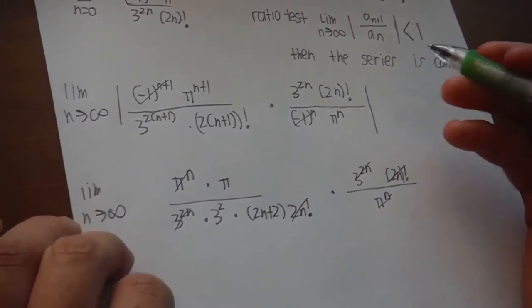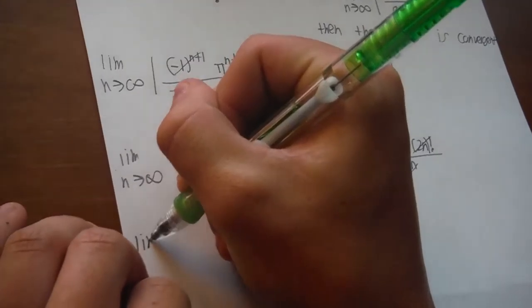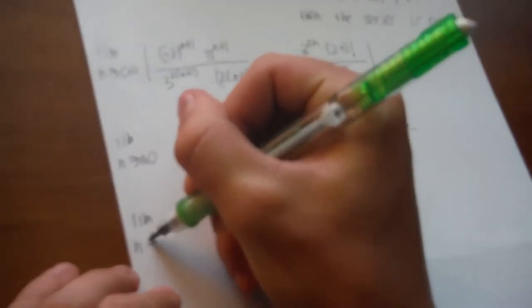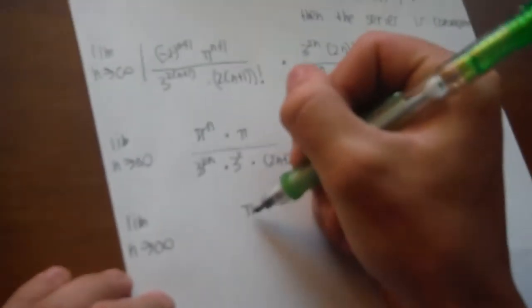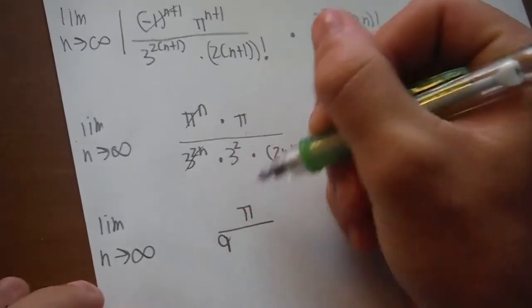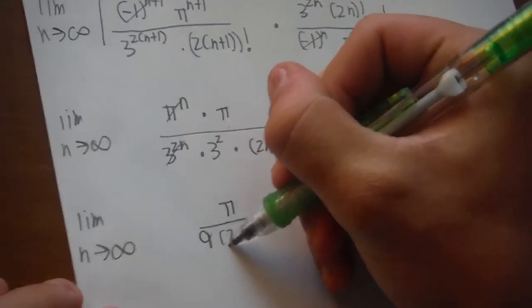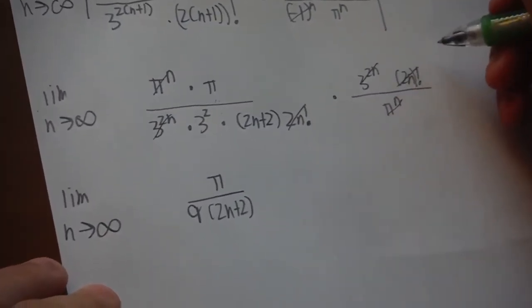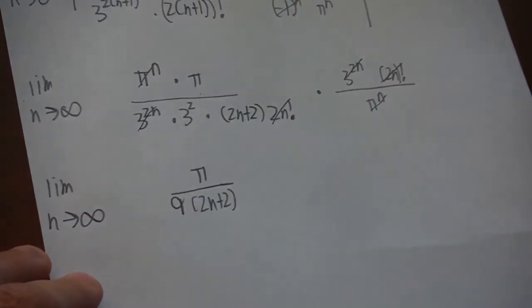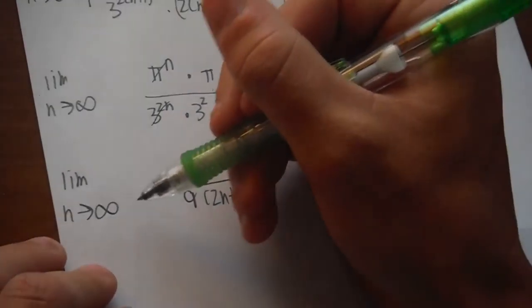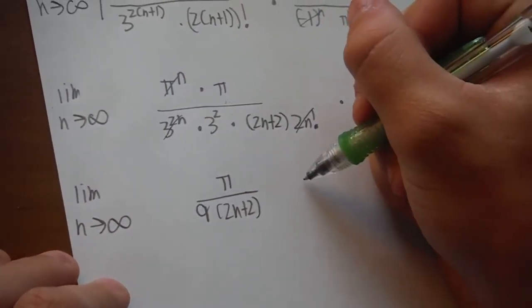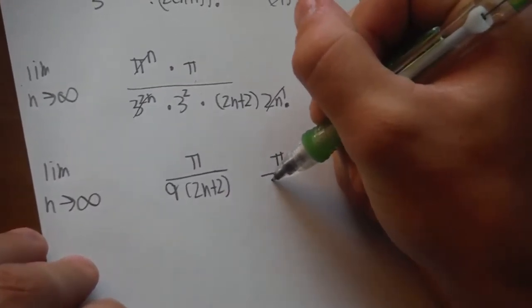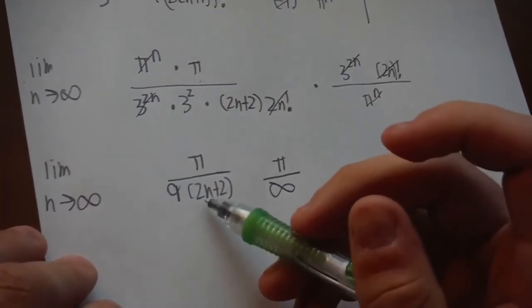So now we just cancel: pi to the n, pi to the n, 3 to the 2n, 3 to the 2n, 2n factorial, 2n factorial. So we are left with this, we've got a pi, we have a 9, and a 2n plus 2, and that is all cancelled.